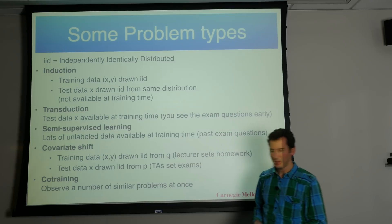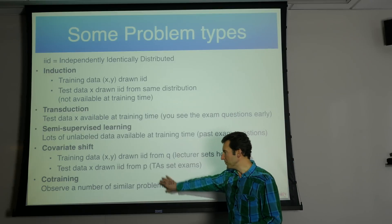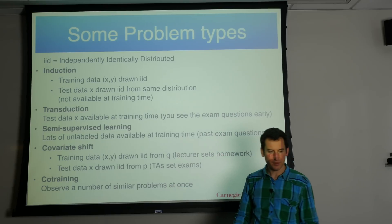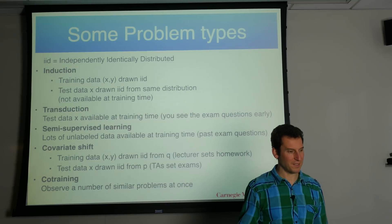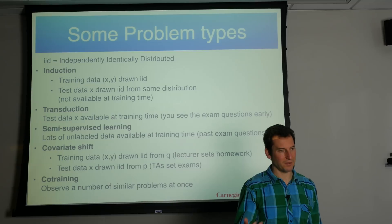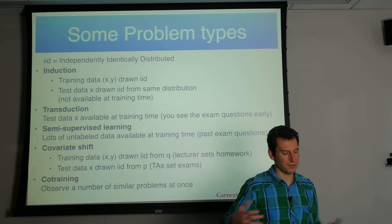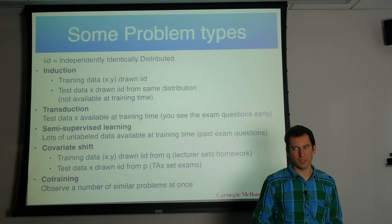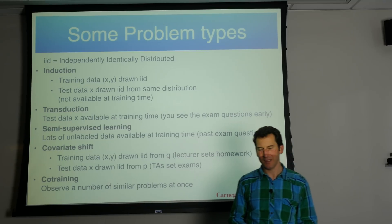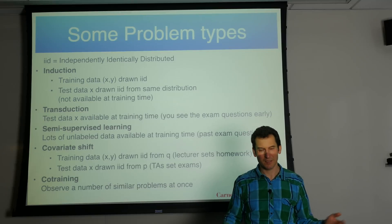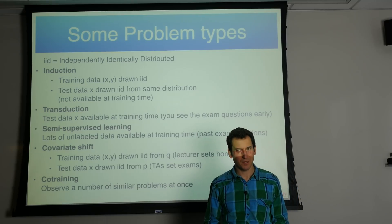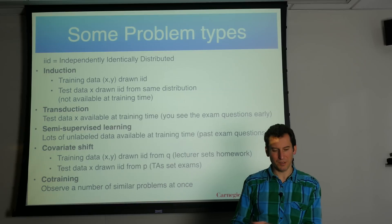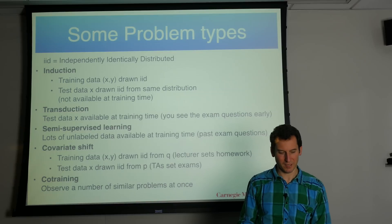Co-training is basically when you have different sets of modalities at once — say you have video and text and you are trying to use both to infer. Multitask learning would be you take this course and then maybe another class on probabilistic graphical models, and the hope is that things you learn for one class will also help you for the other and vice versa.